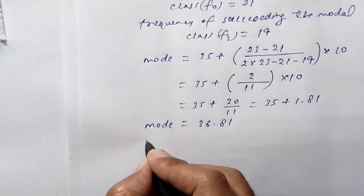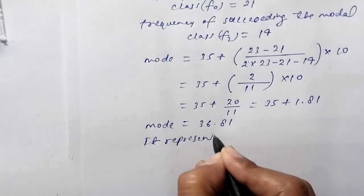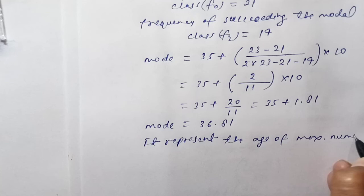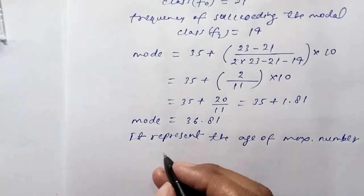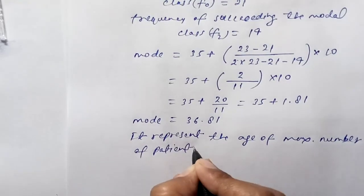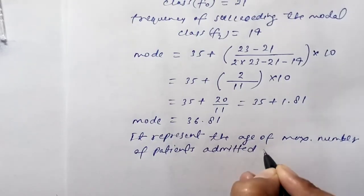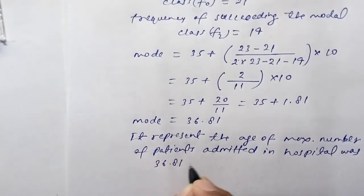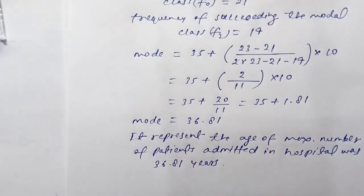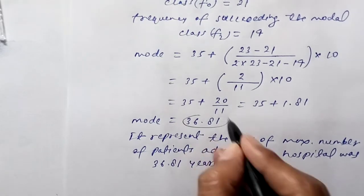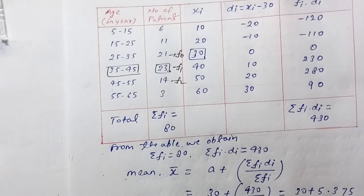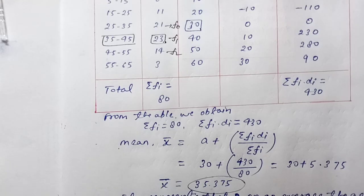The mode is 36.81 years. It represents the age of the maximum number of patients admitted in the hospital, which was 36.81 years. The mean we calculated was 35.375. Thank you for watching. Please like, share, and subscribe.